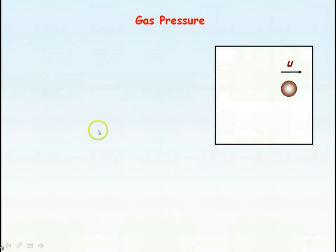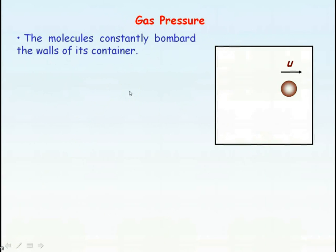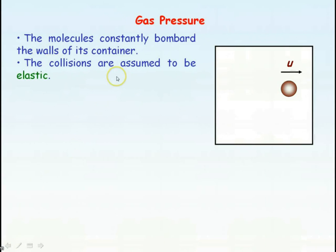We're now going to apply the kinetic theory of gases to explain why gas exerts a pressure on its container. We say that the molecules constantly bombard the walls of the container. An assumption we make is that these collisions are elastic — that is, momentum and kinetic energy are both conserved.